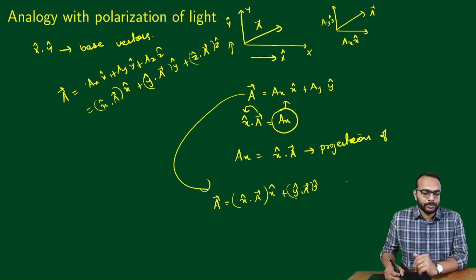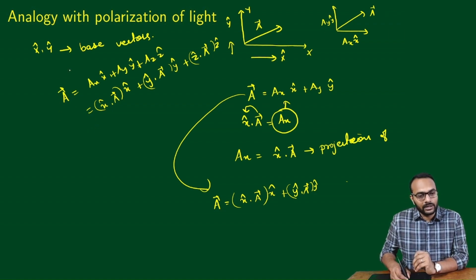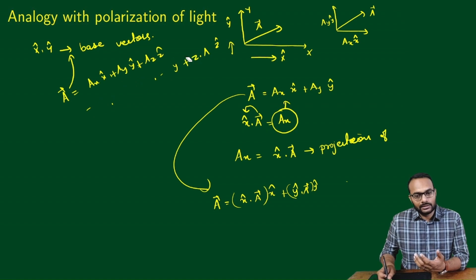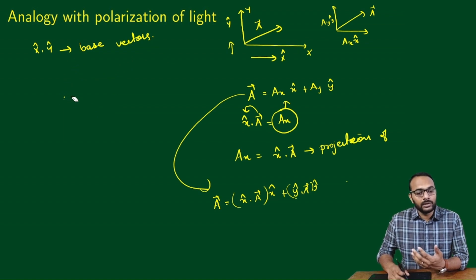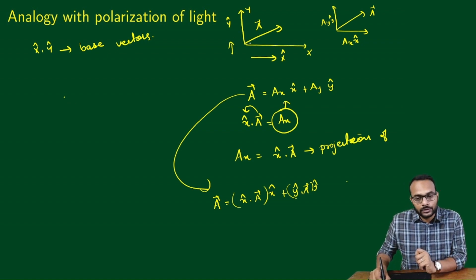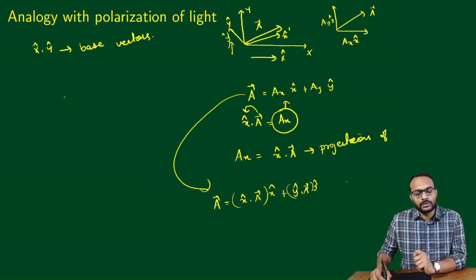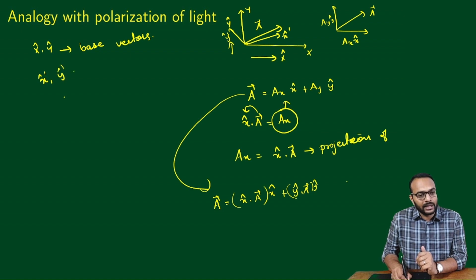What we have seen is that we can decompose a given vector in terms of the base vectors — we can write a given vector as a linear combination of the base vectors. Now, the base vectors are not unique. There is nothing that tells us we have to choose a particular set of vectors as base vectors. We could choose any set of orthogonal vectors — for example, another set of base vectors X̂' and Ŷ' (orthogonal to X̂'). Both XY and X'Y' are valid choices.